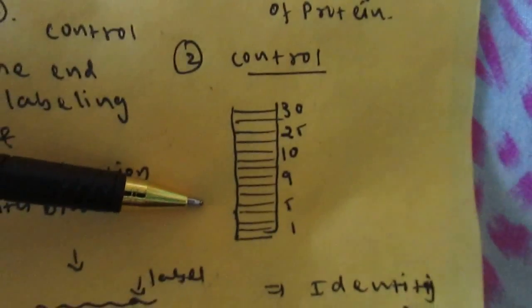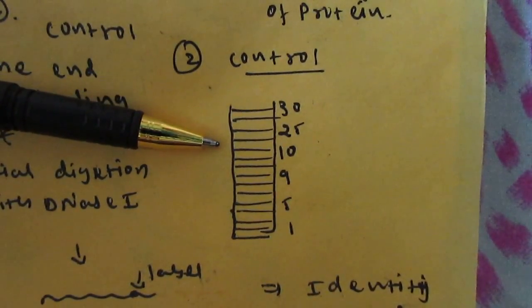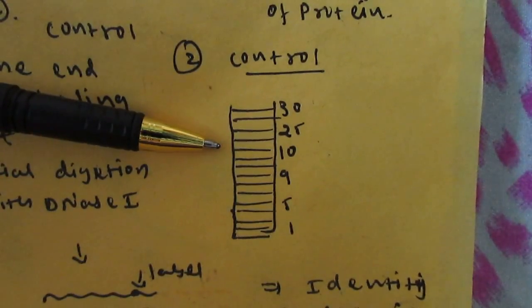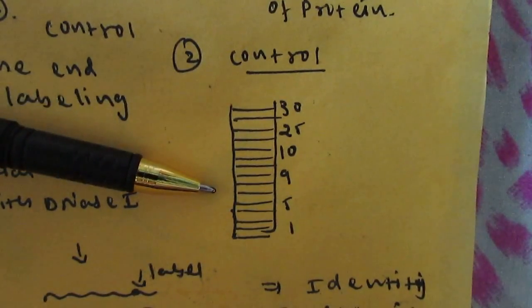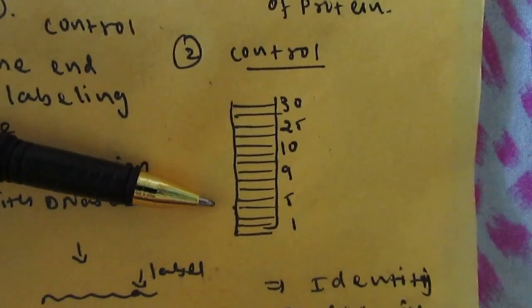In the control sample, we will get all 29 separated, partially digested bands of the DNA molecules because it will give cuts at the end of every phosphodiester bond. So this was the overview of DNA footprinting technique.